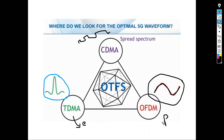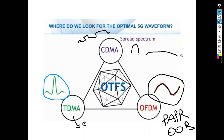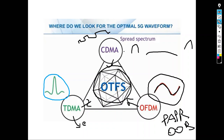For OFDM, the drawbacks are peak-to-average power ratio, out-of-band emission, and synchronization problems in Doppler environments — it's very sensitive to Doppler. For CDMA, while it's resilient to interference because the signal is spread below noise and the receiver multiplies by the code to recover it, there is a limitation in the number of orthogonal codes that can be assigned, and eventually you run out of codes and system capacity saturates. The goal is to bring the advantages of all three into one waveform while reducing the disadvantages.